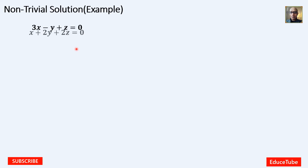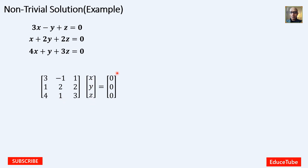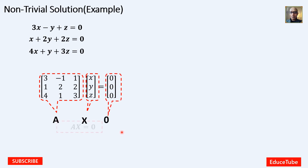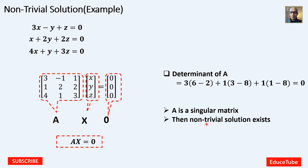Here I am taking 3 equations. I will go for the matrix, taking all the coefficients of X, Y, and Z. This is the coefficient matrix, this is the X vector, and this is the zero vector. So we can write AX equal to 0. We find the determinant of A is 0, so A is a singular matrix and a non-trivial solution exists.